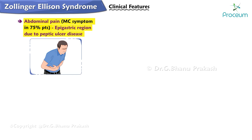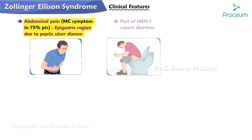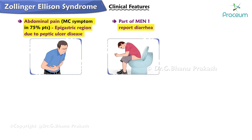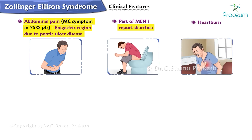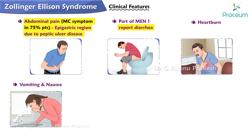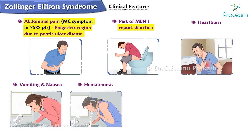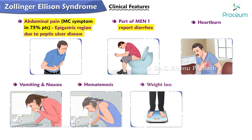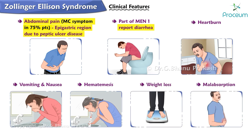Patients suffering from familial Zollinger-Ellison syndrome as part of multiple endocrine neoplasia type 1 report diarrhea as the most common symptom. Heartburn is the third most common symptom. Other clinical features include vomiting, nausea, hematemesis, weight loss, and malabsorption.